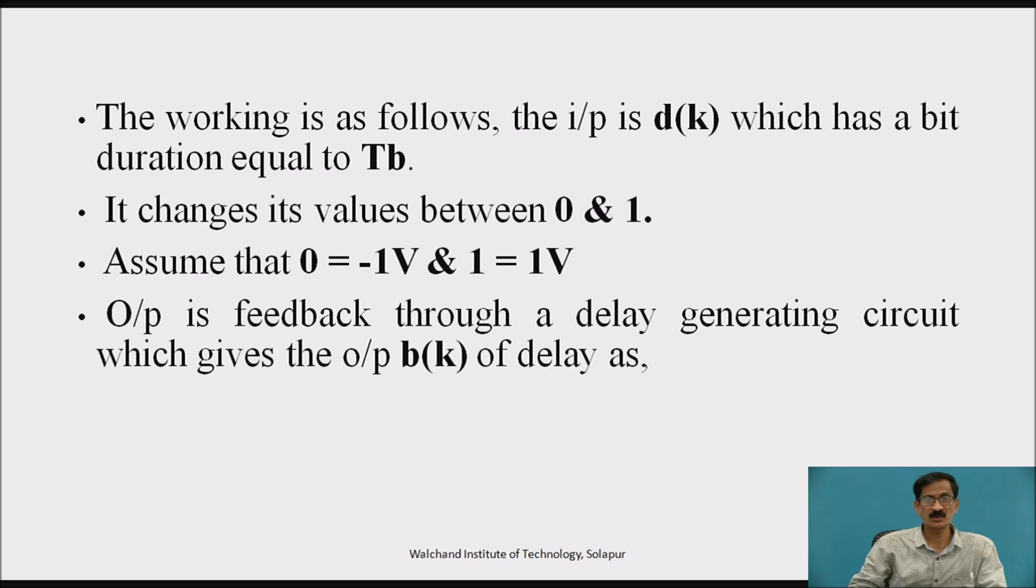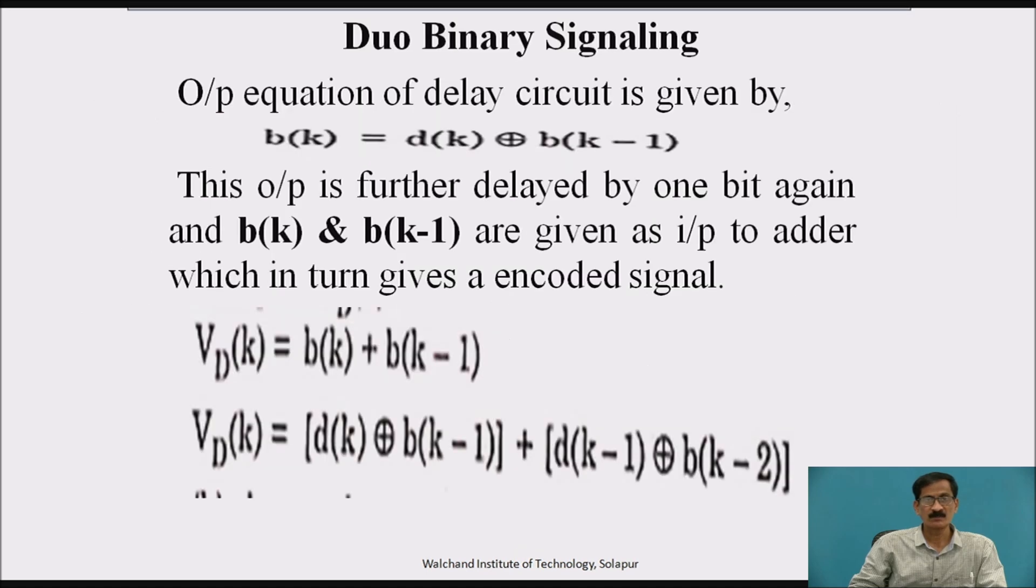The working is as follows: the input is d k which has a bit duration equals to tb. It changes its value between 0 to 1. Assume that 0 equals minus 1 and 1 equals 1 volt.